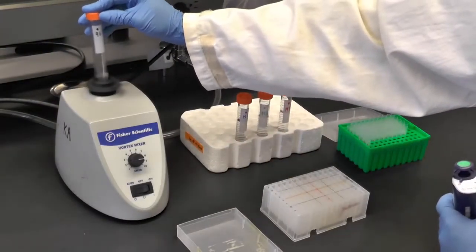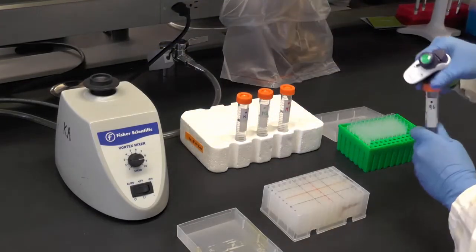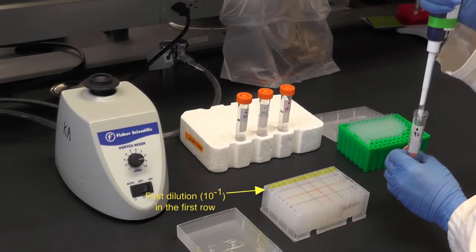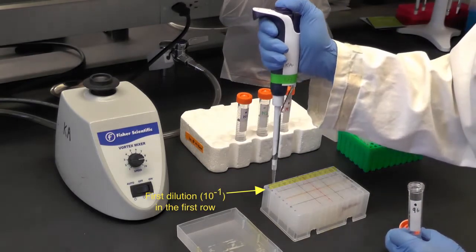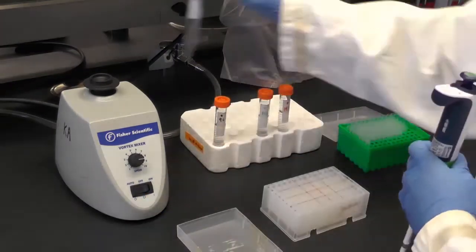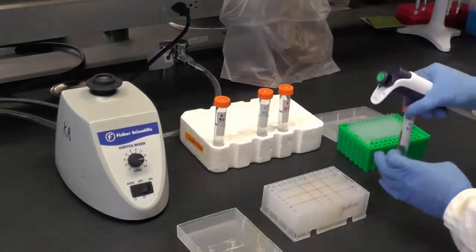Next, use a single channel pipette to transfer the amount of each sample needed to make the first dilution into corresponding wells in the first row. Remember to change pipette tips between samples. You can label the rows with tape to help you remember where each sample should go.